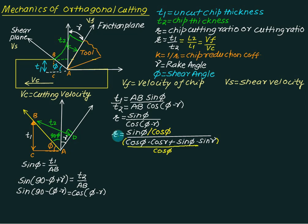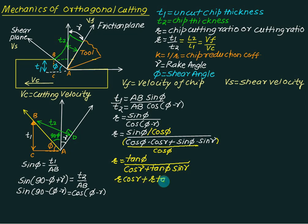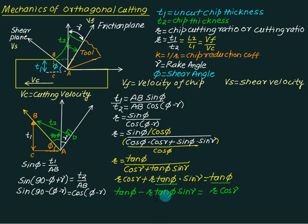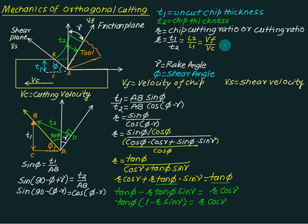Expanding cos(phi minus gamma) as cos(phi)·cos(gamma) plus sin(phi)·sin(gamma), and dividing both numerator and denominator by cos(phi), we get r equals tan(phi) divided by cos(gamma) plus tan(phi)·sin(gamma). Cross-multiplying and rearranging: tan(phi) minus r·tan(phi)·sin(gamma) equals r·cos(gamma). Taking tan(phi) common: tan(phi) times (1 minus r·sin(gamma)) equals r·cos(gamma). Therefore, tan(phi) equals r·cos(gamma) divided by (1 minus r·sin(gamma)). Remember this equation.